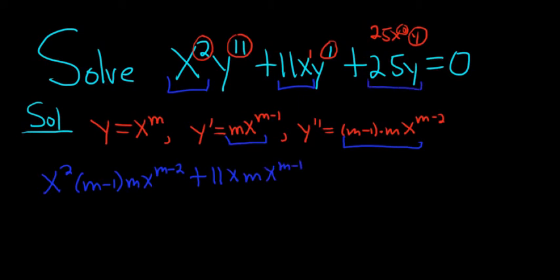And lastly, we have 25y, so plus 25, and y was just x to the m. And this is all equal to 0. So again, step 1, you start by calling it y, take the derivatives, plug it all in.